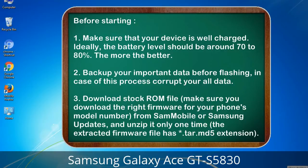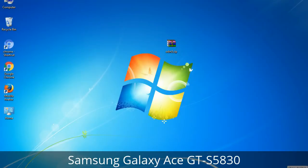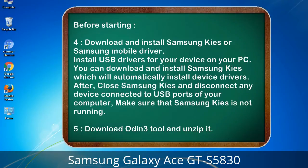Download from Sammobile or Samsung updates, and unzip it only one time. The extracted firmware file has a .tar.md5 extension. 4. Download and install Samsung KIES or Samsung mobile driver. Install USB drivers for your device on your PC. You can download and install Samsung KIES which will automatically install device drivers.